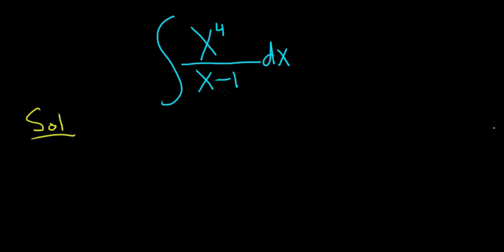So whenever you have a polynomial over a polynomial and the degree in the numerator is bigger or the same, you can use long division. In this case we can use synthetic division because we're dividing by x minus 1. So let's go ahead and use synthetic division and see what happens.